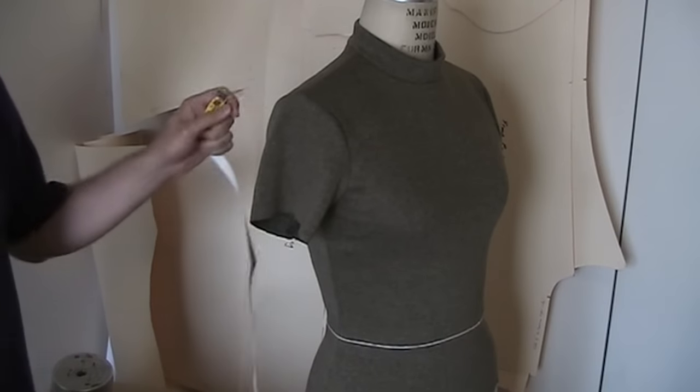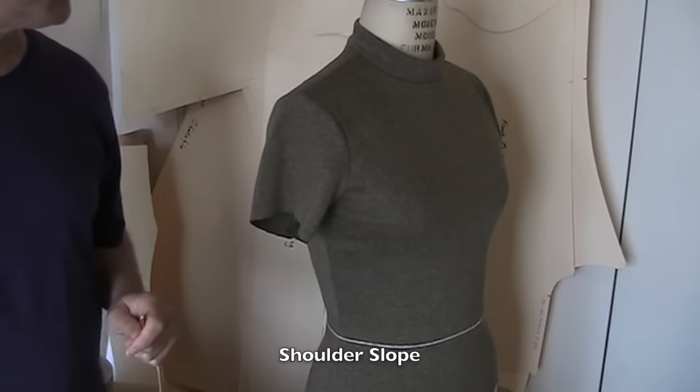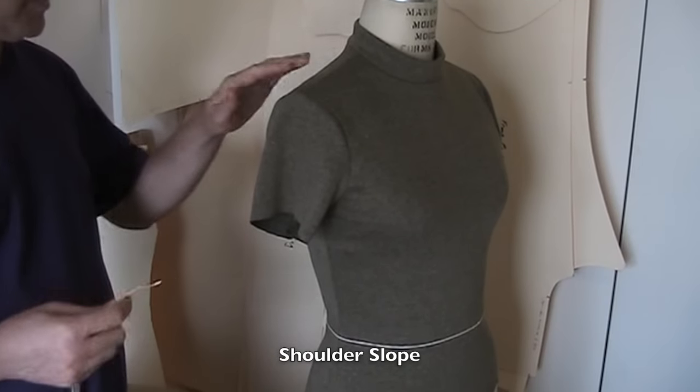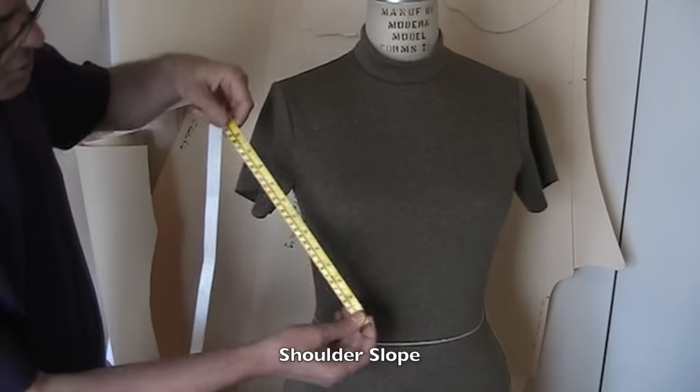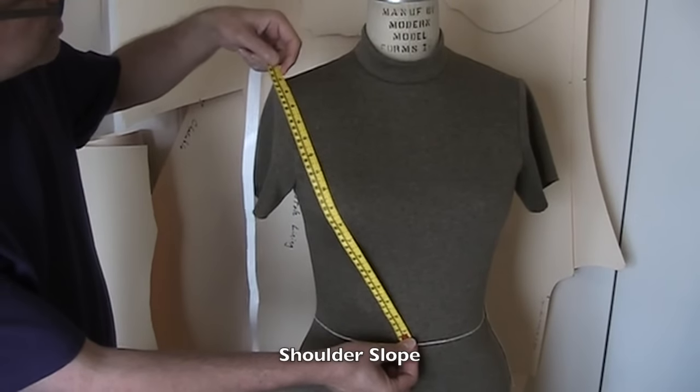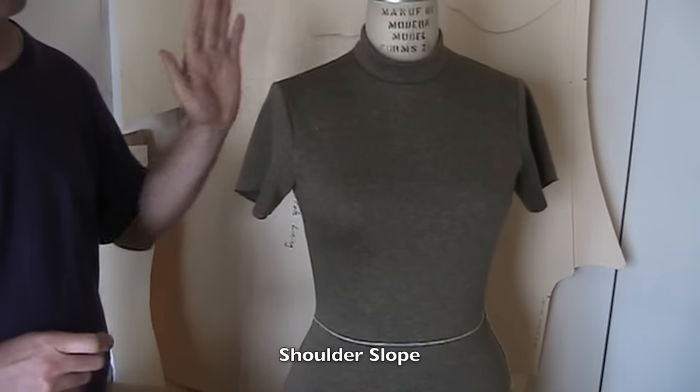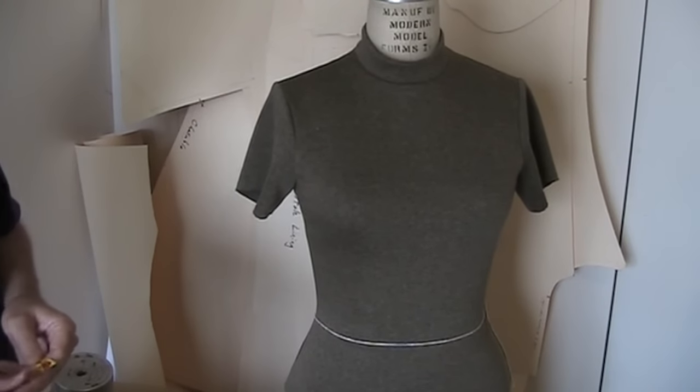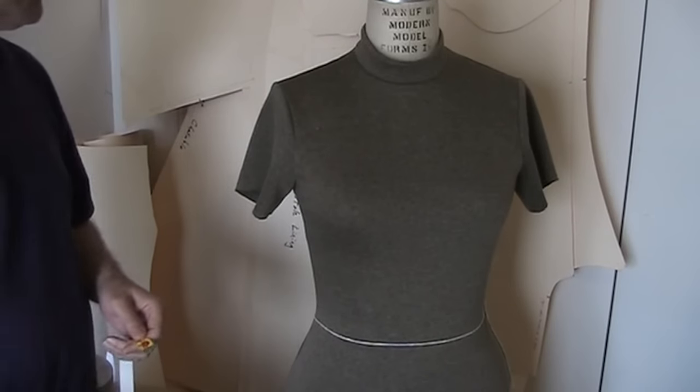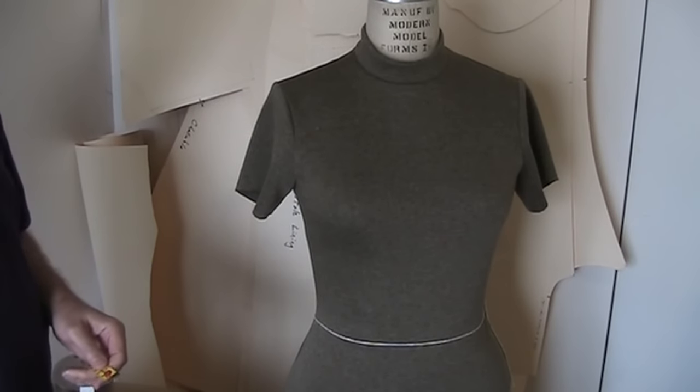And I'm going to measure the shoulder seam length, which I'm getting five inches. And I'll also need to measure the shoulder slope. Now some drafting methods will tell you to measure from center front to your shoulder. I've never found that works properly for me.